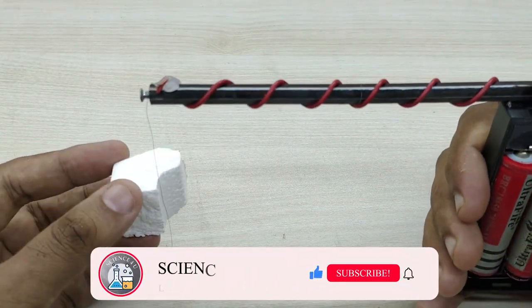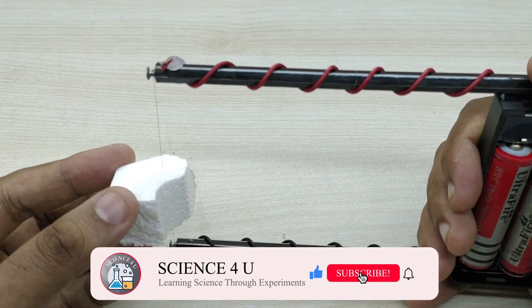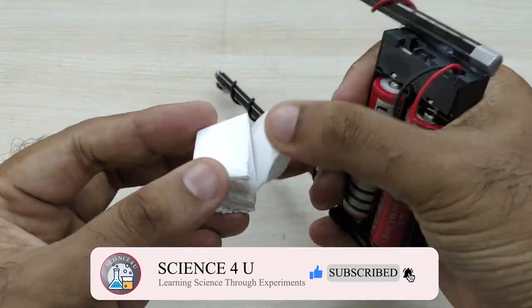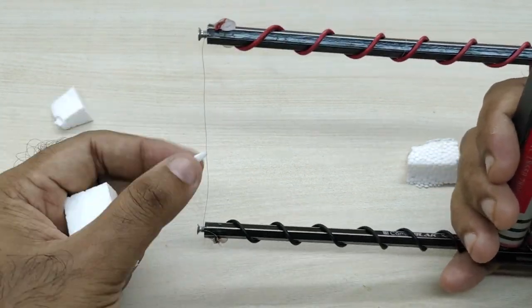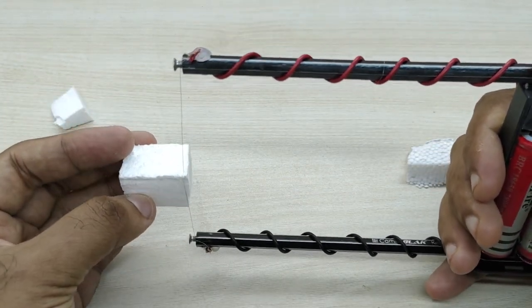Now I cut a small piece of thermocole for fixing the coil using my homemade thermocole cutter. If you are interested, you can watch the making video of the thermocole cutter by clicking the video link given above.